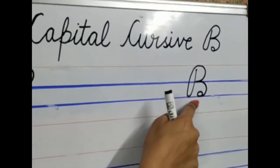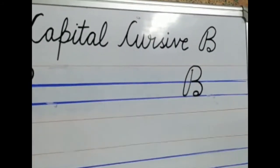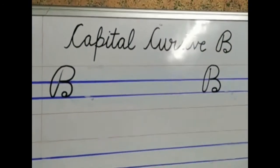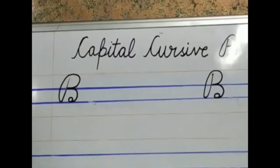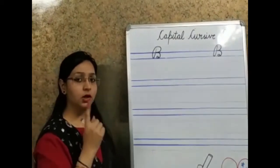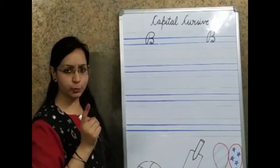So, this is not going to touch. And this is not going to touch. So, this is how you are going to make capital cursive B. So, children. You have to practice capital cursive B. One full page in your notebook. Okay.